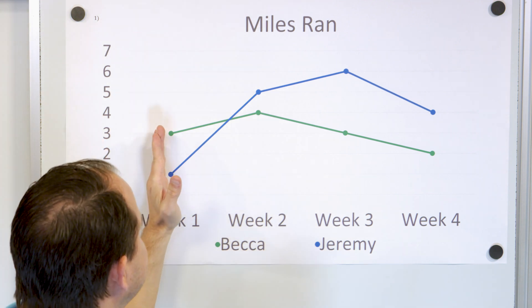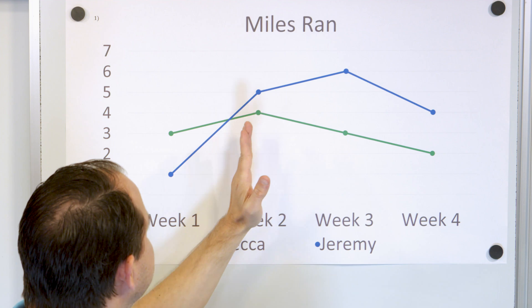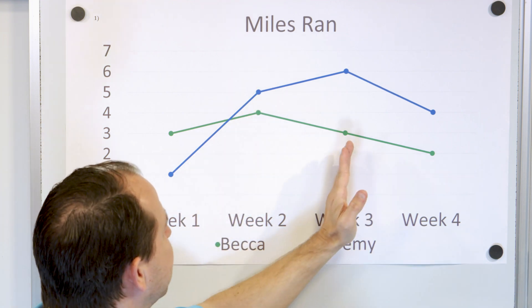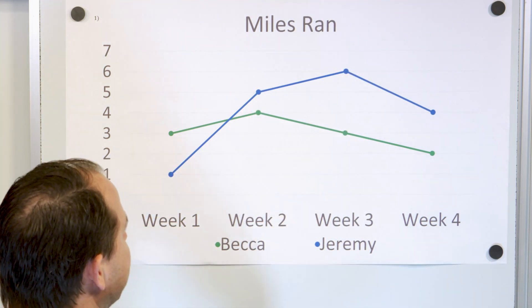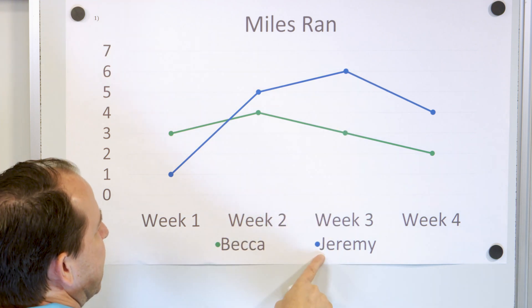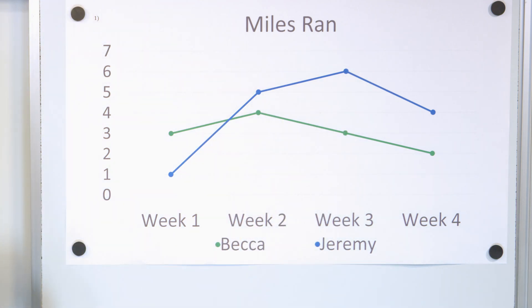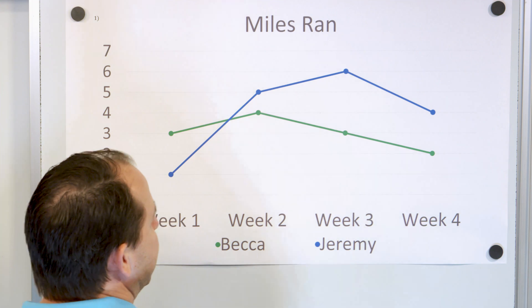So the way you read these graphs is you step in time. Week one, read those numbers. Week two, read these numbers. Week three, read these numbers. And in fact, in this week, Jeremy ran a whole lot more than Becca. And on week four, Jeremy again ran more than Becca.